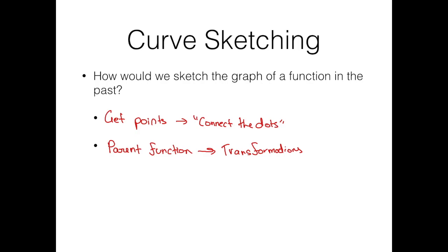So let's say we wanted to sketch the graph of x squared plus 1. We would compare it to x squared and then we would just shift it up by 3. So that's the two ways in which we might do this. However, both of these have their downfalls. Plugging in points, for example, is super inefficient because you'd have to plug in so many different points to get a good sketch of what's going on, and it's very time consuming, especially when your functions get increasingly complex. And for parent functions, the issue is that you need to know the parent function. If you don't know the parent function, you're not going to be able to graph it. So that's the problem that we run into.